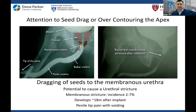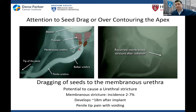Going too low can cause issues — needles or seeds being dragged down to the membranous urethra is where strictures typically happen. A patient comes in 18 months later saying it burns and stings at the tip of the penis — that's a stricture. The incidence is about two to seven percent. We looked at some of the data from the ASCENDE-RT trial, which had a higher stricture rate, and some of the seeds appeared to have been dragged. Knowing where your apex is is really paramount.